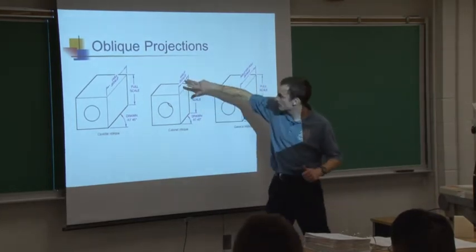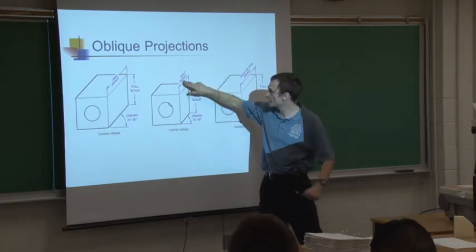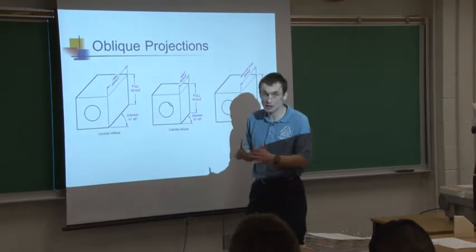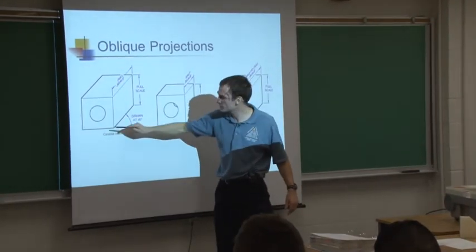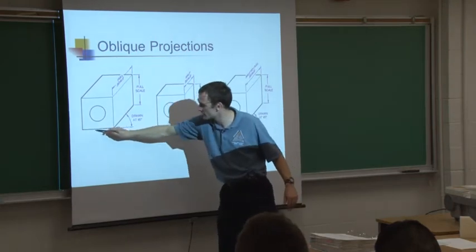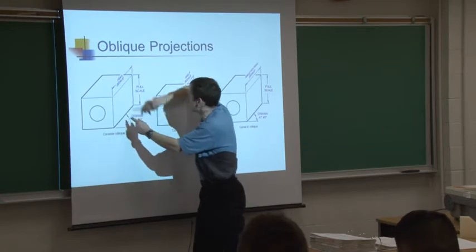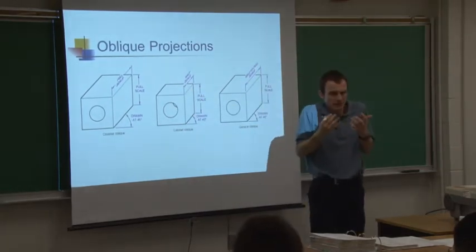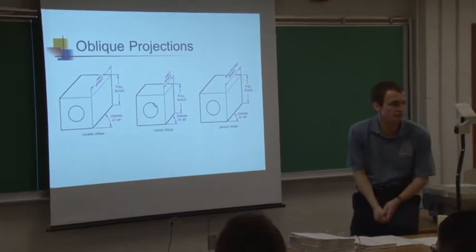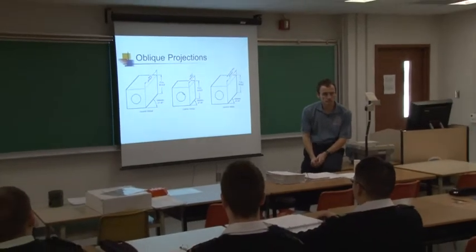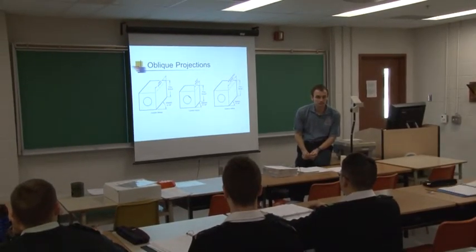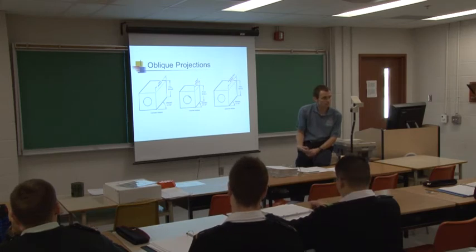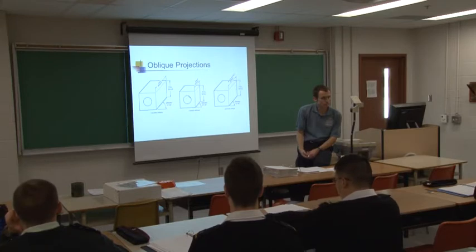Why are we spending a whole lecture on oblique projections? Drawing things freehand is a lot easier with this approach. You get to see the front face true size and shape, which makes it easier to draw. You can see more of the part, and you could even put dimensions on the front face if needed.